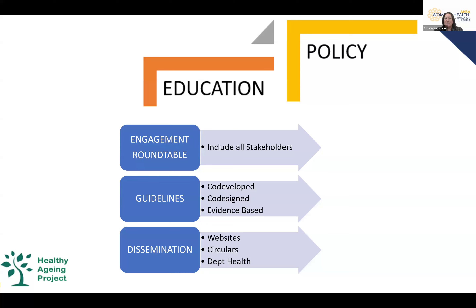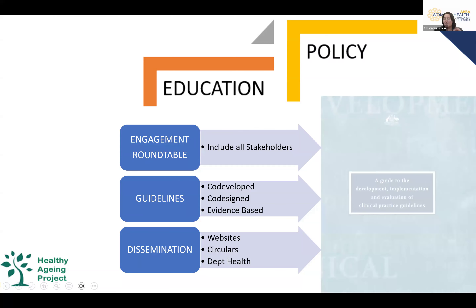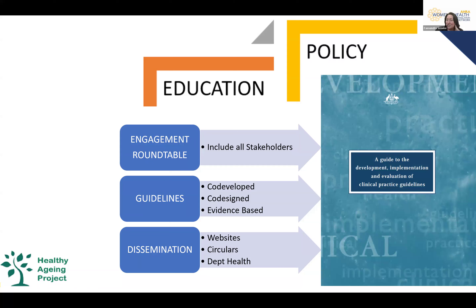When you've got education, you want to move into policy development. There are three elements: engagement, guideline development, and dissemination. Engagement means including all stakeholders. Guidelines need to be co-developed, co-designed and evidence-based. Dissemination uses various networks depending on the target audience, from community to health professionals. Australia has a well-developed NHMRC guide to the development and implementation of clinical practice guidelines.